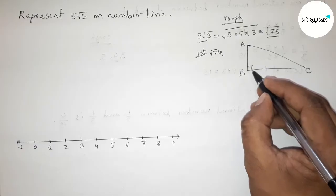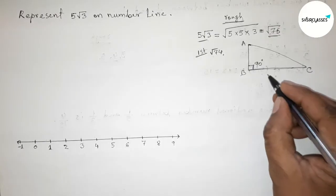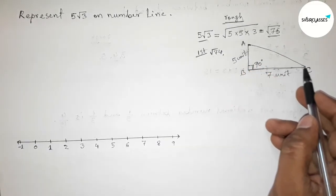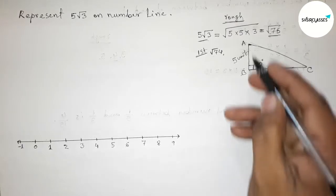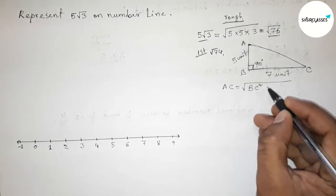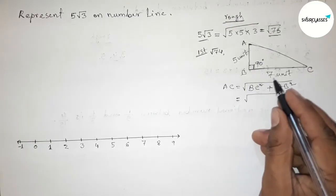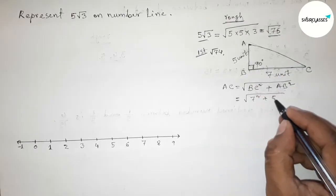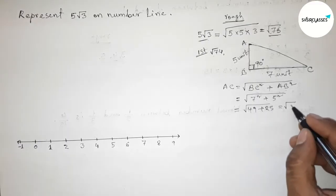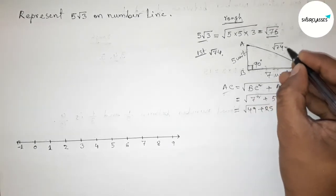Roughly drawing a right angle triangle ABC with a 90° angle. Taking the base BC as 7 units and the perpendicular AB as 5 units, then finding the hypotenuse AC using the Pythagorean theorem: AC = √(BC² + AB²) = √(7² + 5²) = √(49 + 25) = √74 units. So the hypotenuse AC equals √74.